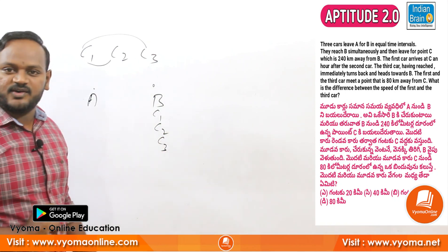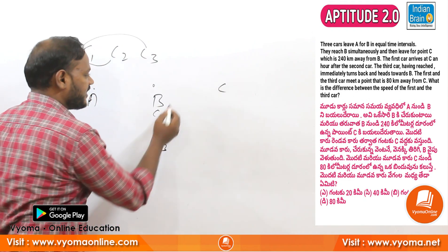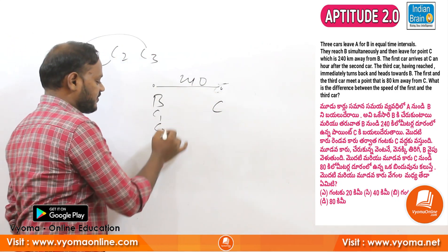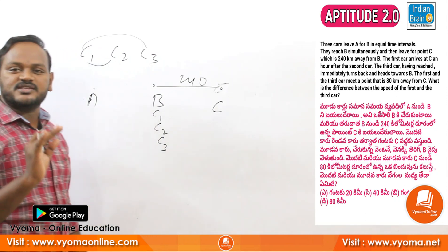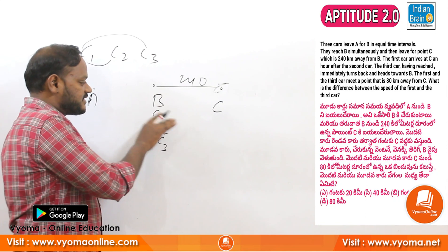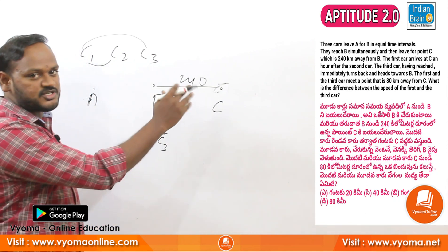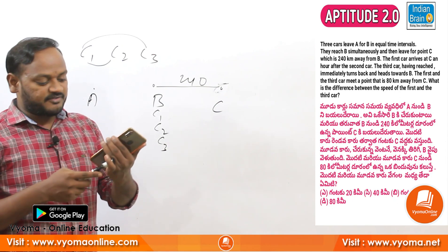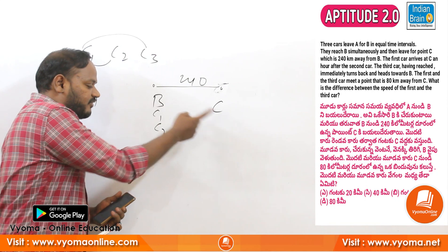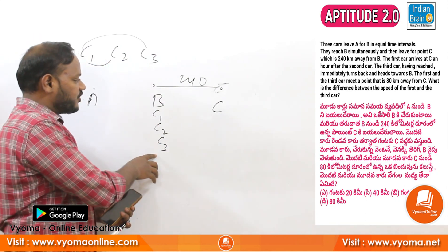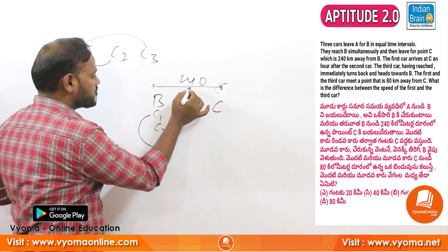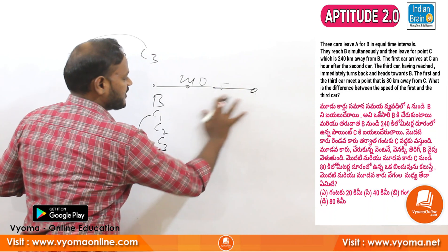At point A, C1, C2, C3 travel to the C point, which is 240 km away. Based on universal facts: C1's distance from the meeting point is 240 minus 80, which gives us 160 km. C3 travels 80 km from C. So the distance covered by C1 is 160 km and by C3 is 80 km to the meeting point.